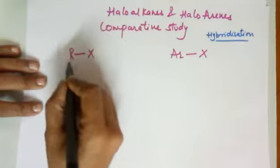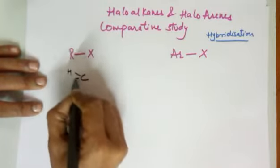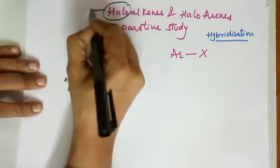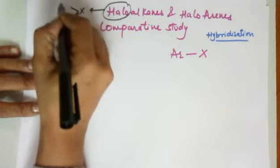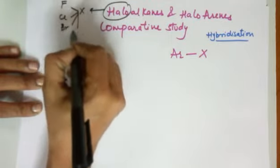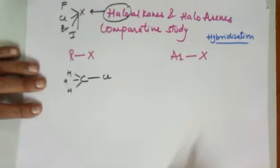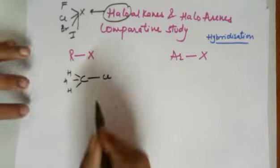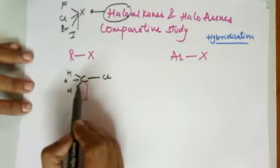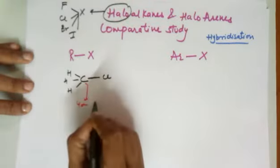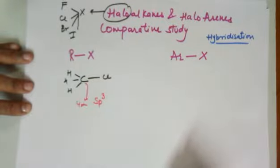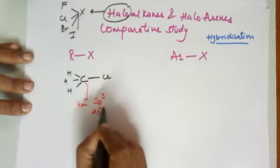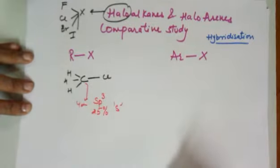Let me take the simplest example of an alkyl halide: CH3-Cl, where halo refers to the halogen which could be any of the four — fluoro, chloro, bromo, or iodo. In this compound, the carbon to which chlorine is attached has four sigma bonds. Since there are four sigma bonds, the hybridization becomes sp3. Therefore the percentage s-character in sp3 is one out of four, so 25%.